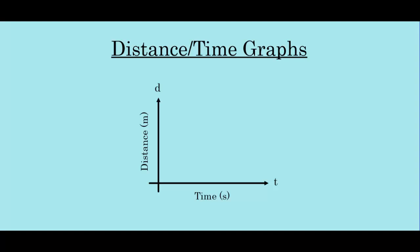So to recap, for all distance time graphs, distance will be the dependent variable on time. So distance will go on the y-axis, time will go on the x-axis. Or we can rename them the d-axis and the t-axis.